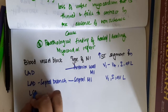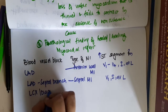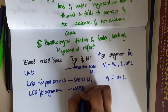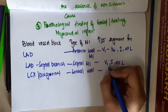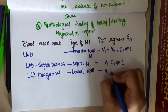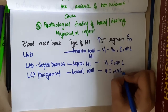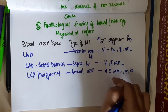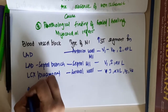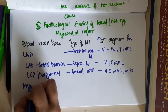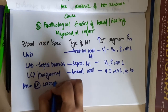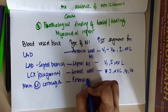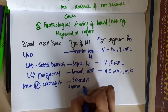If the left circumflex or diagonal artery is blocked, this leads to lateral wall MI, causing ST segment elevation in lead 1, AVL, lead 5, and lead 6. If the main left coronary artery is blocked, this shows extensive anterior wall MI with ST segment elevation in V1 to V6 and lead 1, AVL.